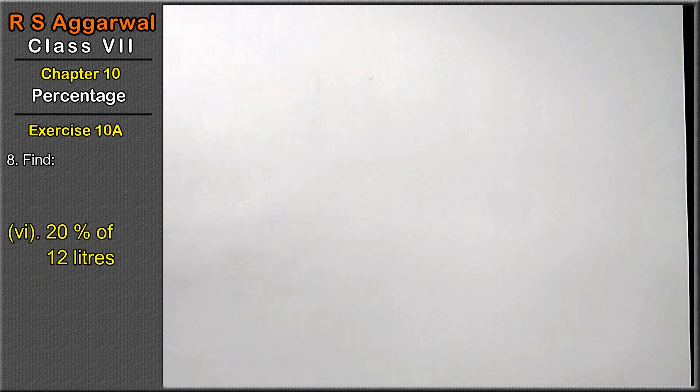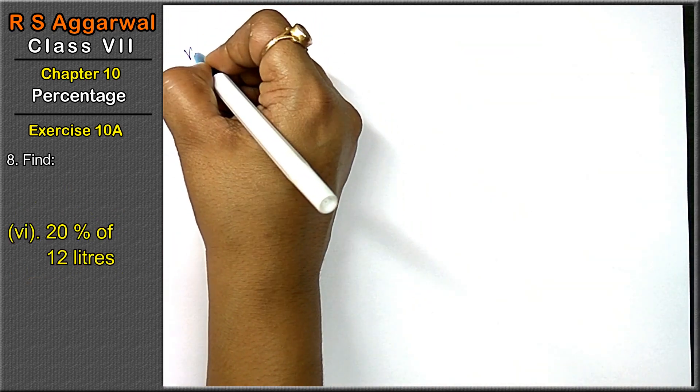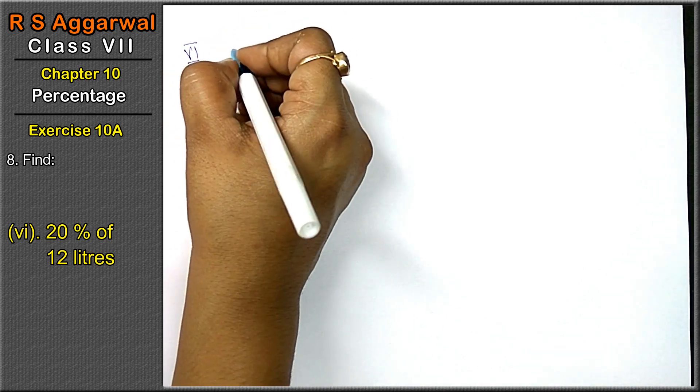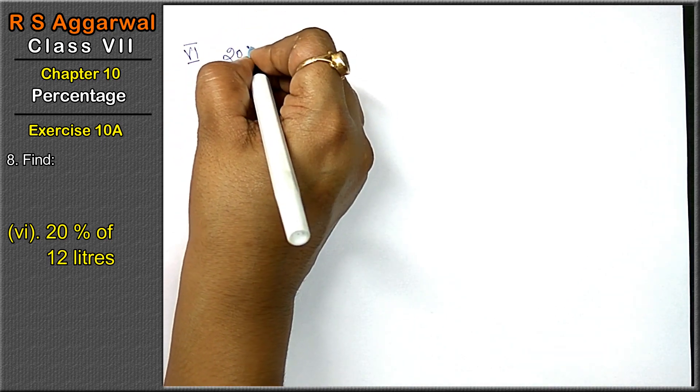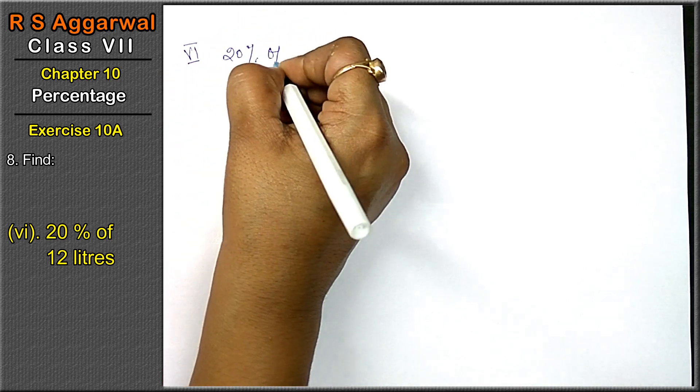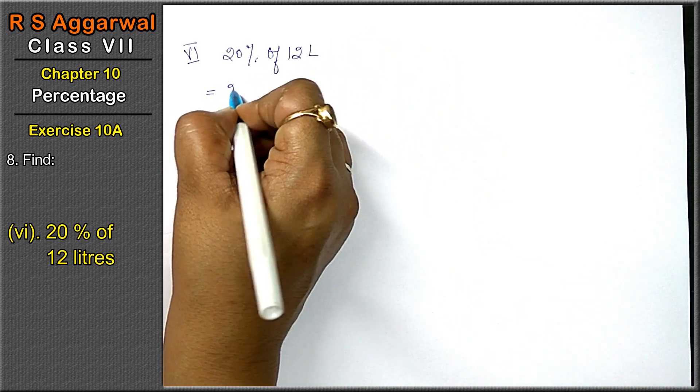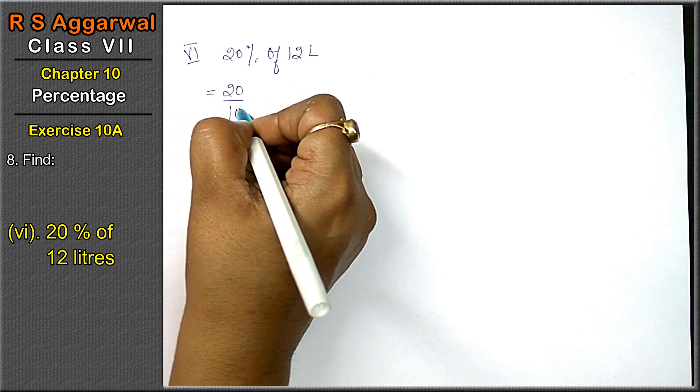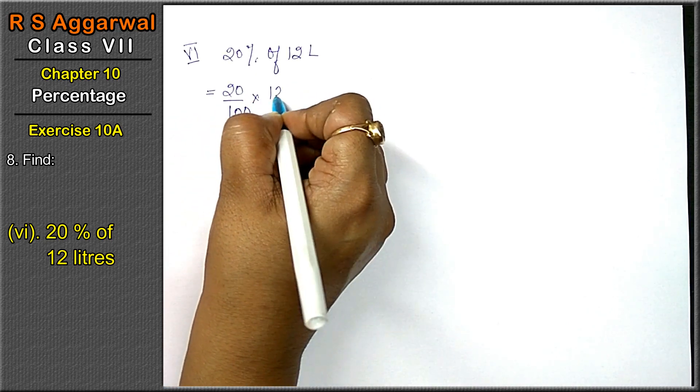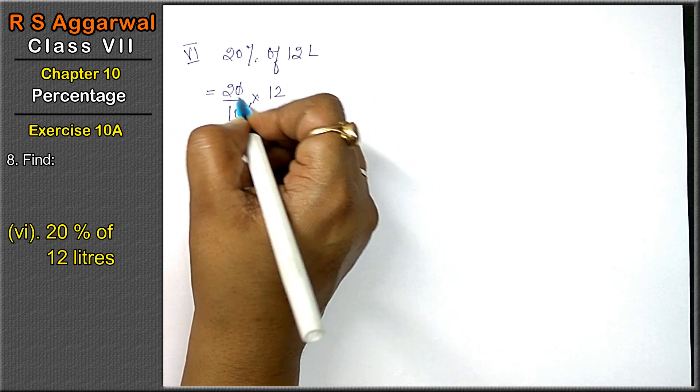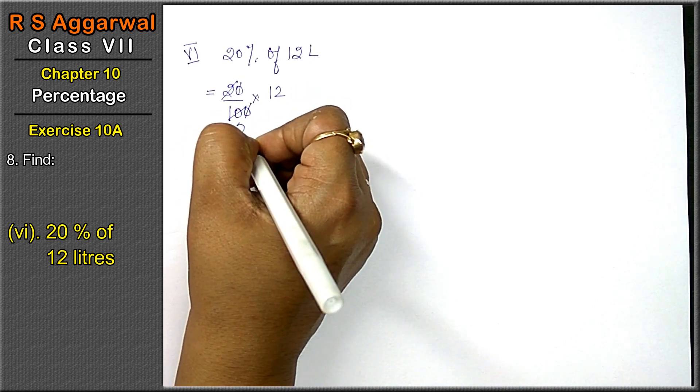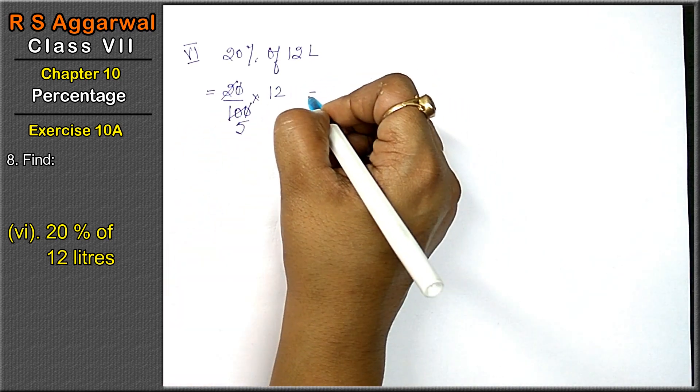Let's do the last part of this question. Sixth part is 20% of 12 liters. 12 liters times 20%: 20 upon 100 into 12. One zero and one zero cancel. 2 times 1 is 2, 2 times 5 is 10.